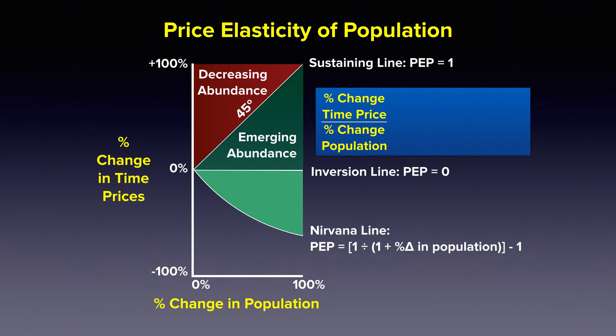There is an equation for the Nirvana line. Above that line, we identify the area as the accelerating abundance zone, and below the Nirvana line, we identify that area as superabundance.